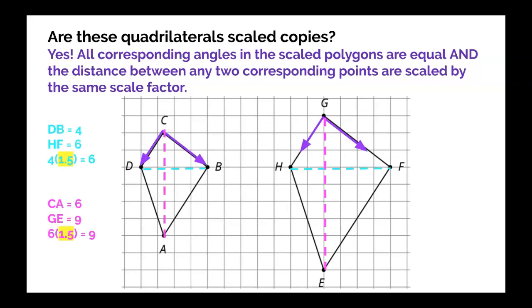Here you don't even have to look at side lengths. You can look at distances between any two corresponding points. From D to B, we can easily count that its distance is 4. H to F has a distance of 6, and 4 times 1.5 is 6.